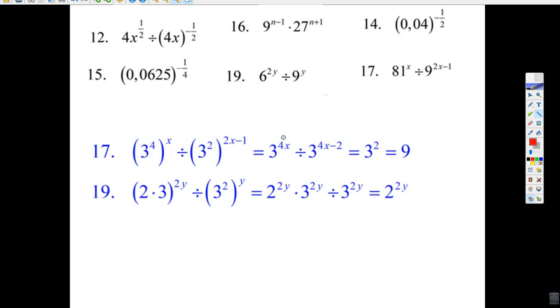Now, when you divide two things at the same base, you subtract 4x minus 4x. Well, that's nothing. The x's are gone. But then you have nothing else here. Minus minus 2, it turns into 3 squared. It turns into, when you subtract negative 2, because you're dividing, you subtract the exponent, it becomes positive 2, and 3 squared is 9.